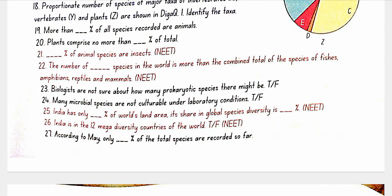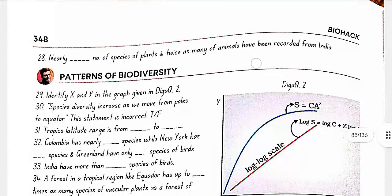India is among the 12 mega-diversity countries of the world — true. According to May, only 22% of total species have been recorded so far. Nearly 45,000 species of plants and twice as many species of animals have been recorded from India.